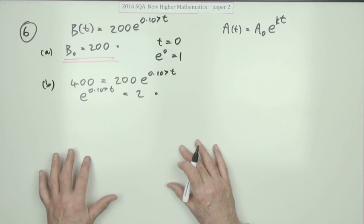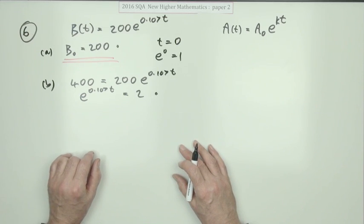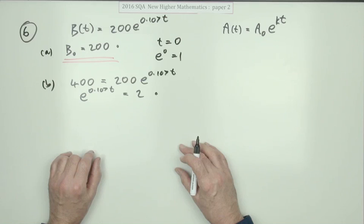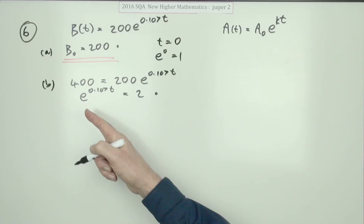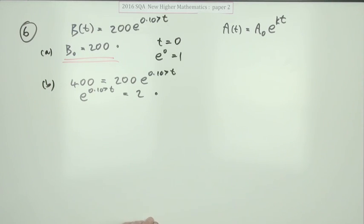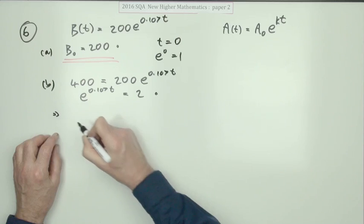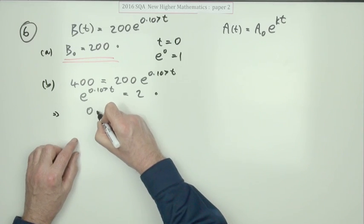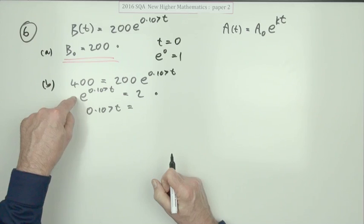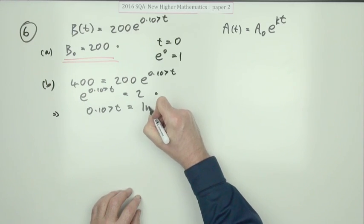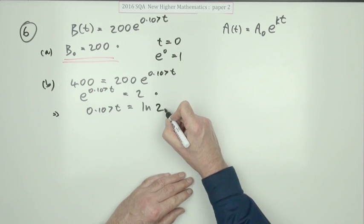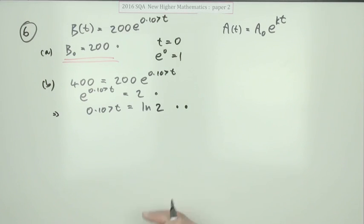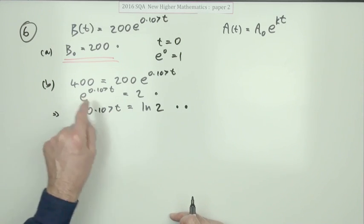Now it comes to this thorny business. At Higher level you're introduced to the logarithm as the inverse function of the exponential function. This is an exponential function base e, so quite rightly you can write the next line as 0.107T equals log base e of two, applying the inverse function to both sides. If that's all you write, you get two marks, and that reflects a proper understanding of functions and their inverses.